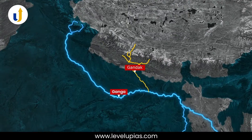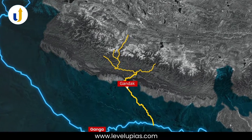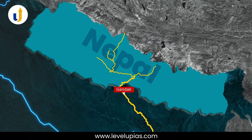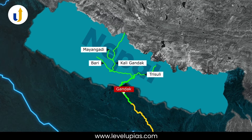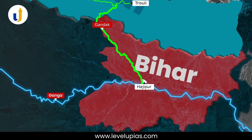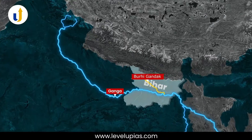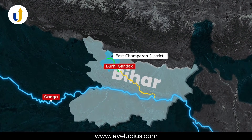The Gandak River receives a large number of tributaries in the Nepal Himalayas. Its important tributaries are the Kali Gandak, the Mayangdi, the Buri and the Trishuli. It flows into the Ganga at Hajipur in Bihar.